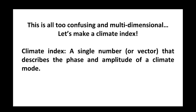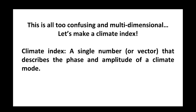This is way too confusing and multi-dimensional for human brains to handle, so let's make a climate index — that would be much easier. A climate index is a single number, or maybe a vector, that describes the phase and amplitude of a climate mode. That's how we handle this complexity in the atmosphere.